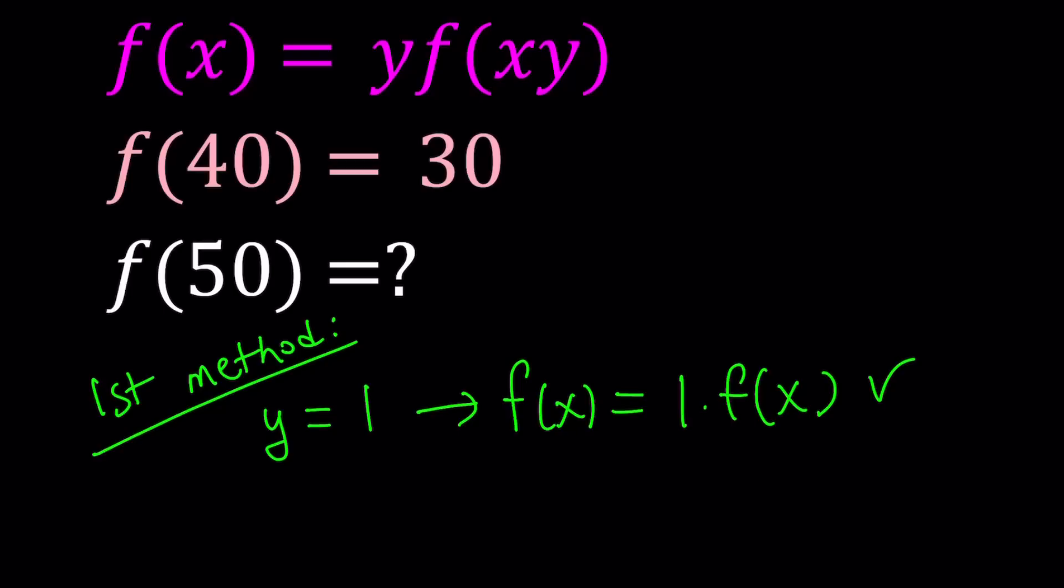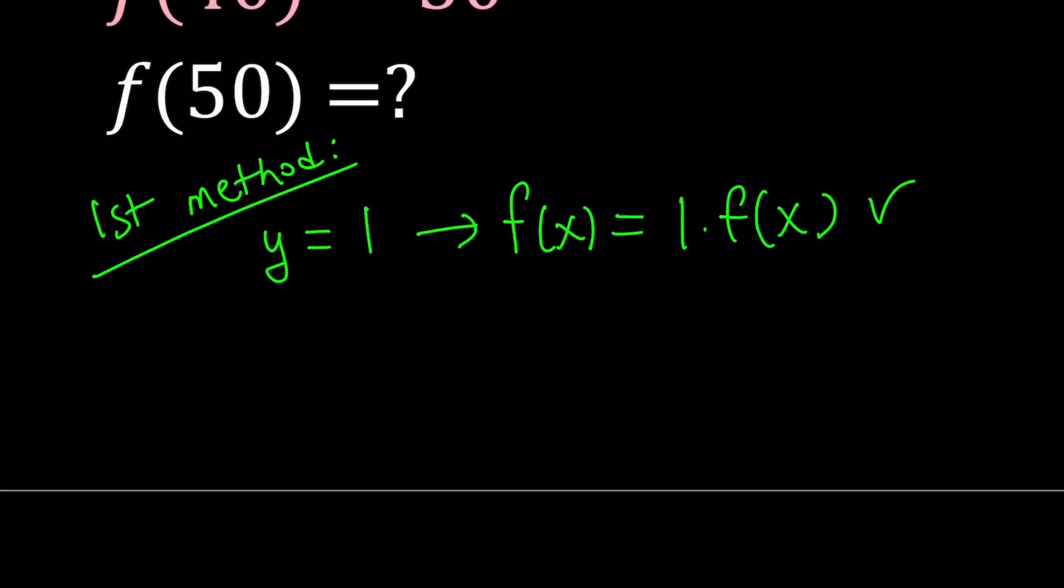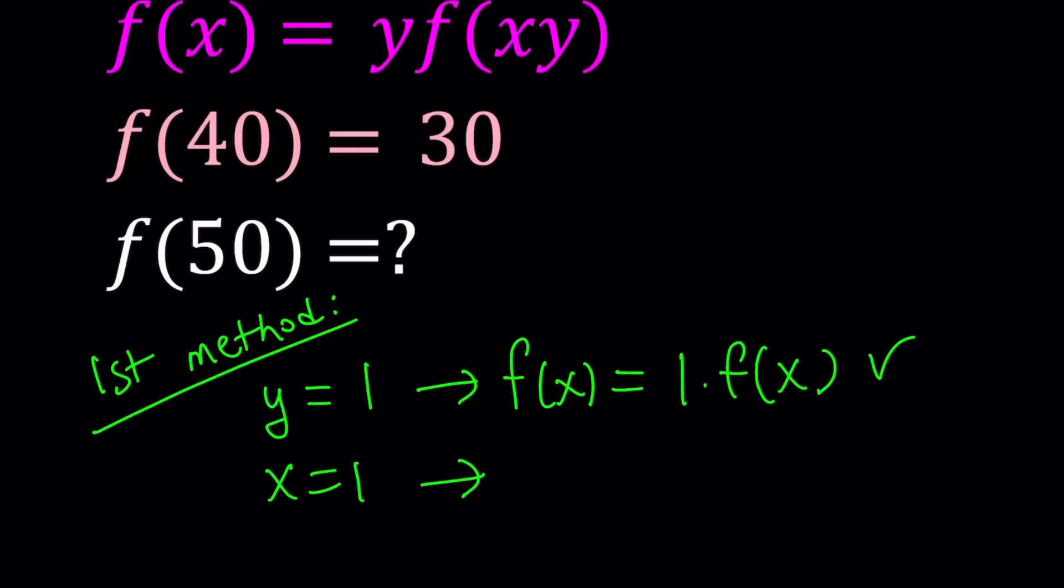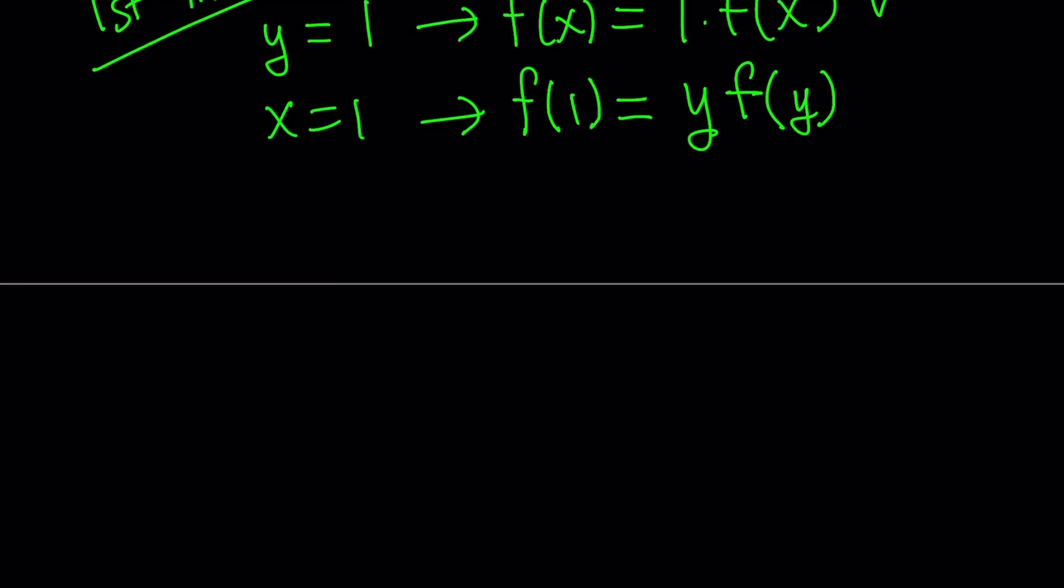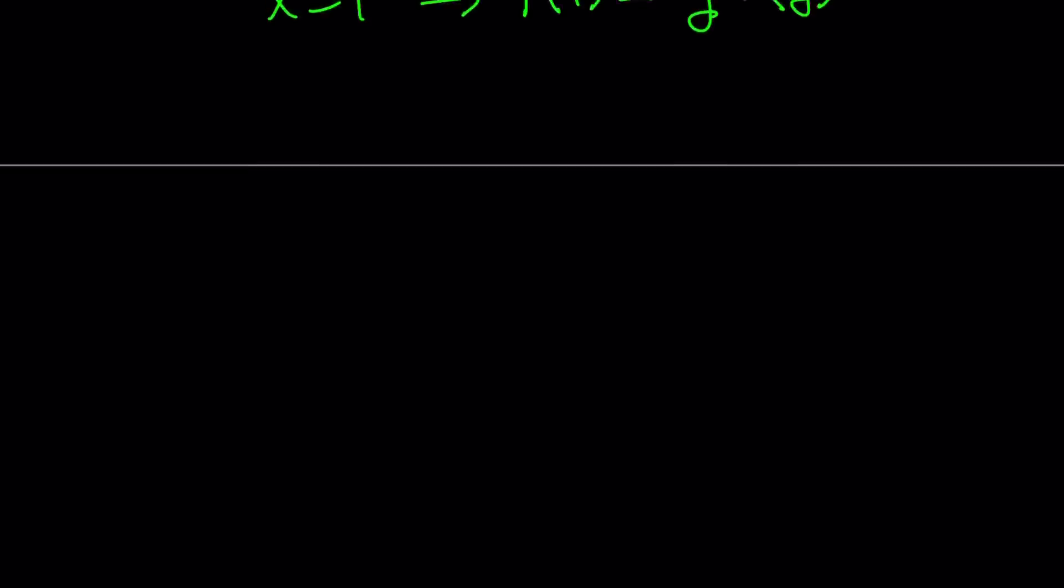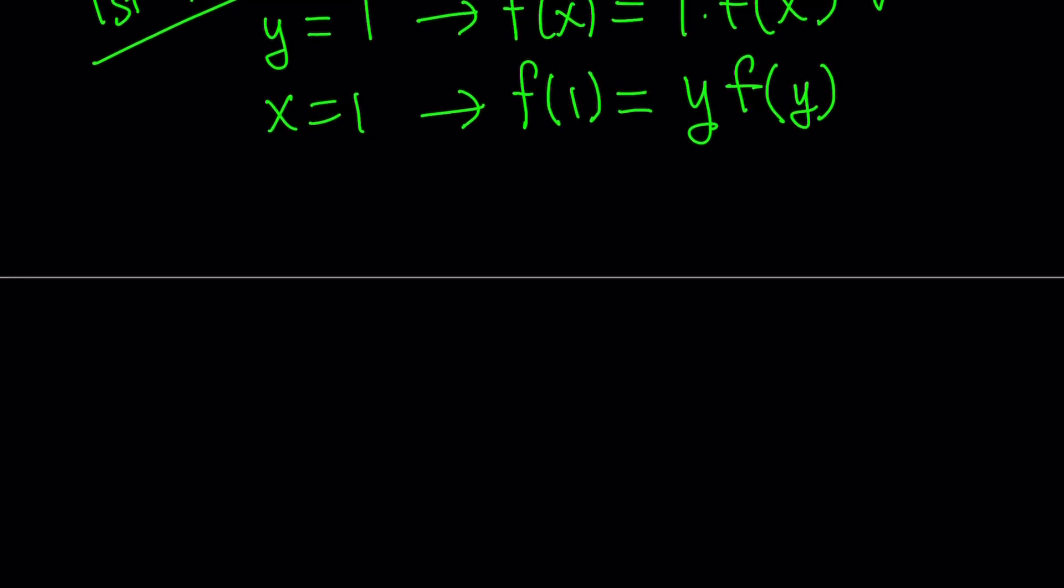Anyways, that doesn't matter. Sometimes it's good to see things that don't work or that don't help, because it's not always hit and score. It's sometimes hit and miss. Anyways, x equals 1 gives us, let's see what happens. If x equals 1, then I get f(1) equals y times f(y). So this is definitely much better than the first one, because it gave us f(y) and a y and an f(1). This is really nice, because f(1) is a constant, so I can go ahead and set it equal to c.